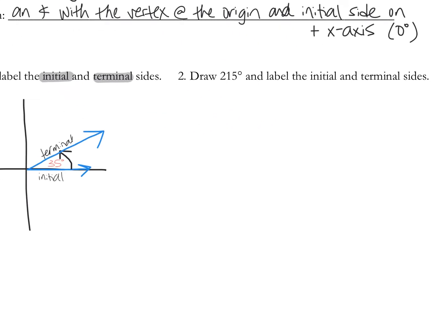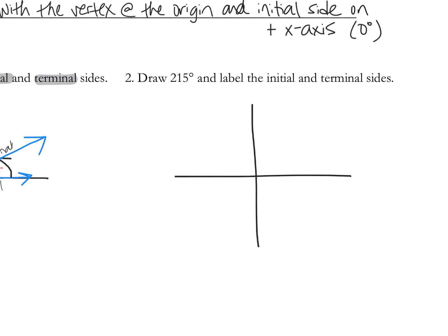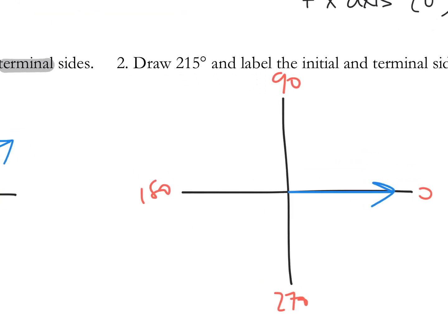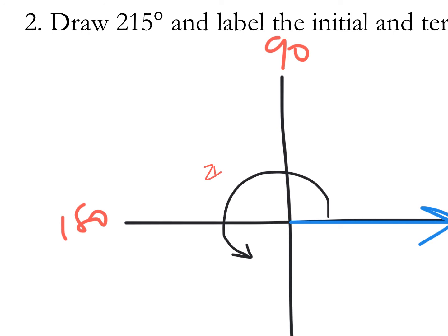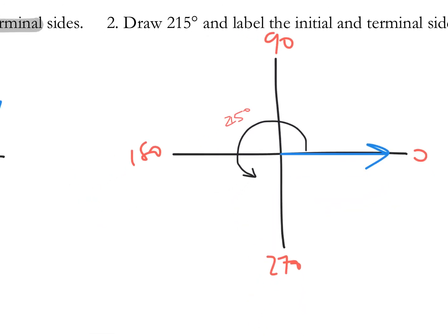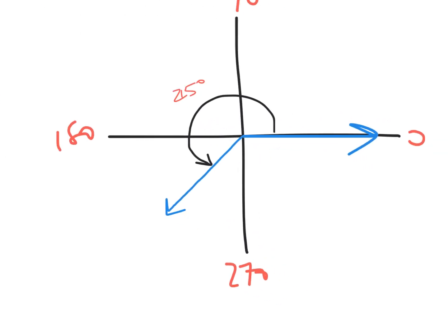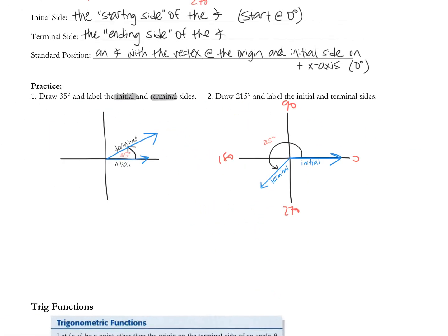Let's try another one — draw 215 degrees. I'm going to start with my coordinate plane, starting at zero degrees on the positive x-axis, and rotate around. Remember: this is zero, this is 90, this is 180, and this is 270, all the way back to 360. So 215 degrees is somewhere between 180 and 270 — down here. Starting at zero, going all the way around this direction — this is 215 degrees. I'll draw my ending ray right here. This is the initial side where I started; you always start at zero. And I ended here. Initial means starting; terminal means ending. That's how we draw angles.